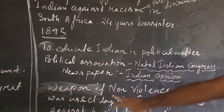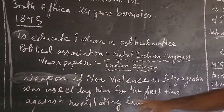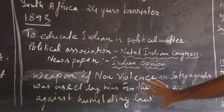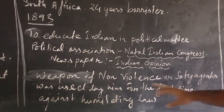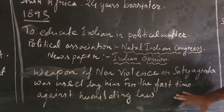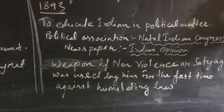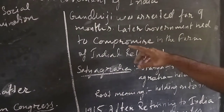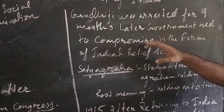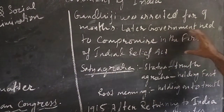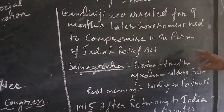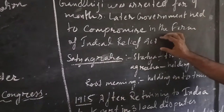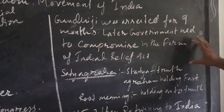The weapon of non-violence, or Satyagraha, was used by him for the first time against humiliating laws in South Africa. He took the stand of non-violence and Satyagraha against those humiliating laws. Gandhiji was arrested for 9 months when he took this stand, but later on the government had to release him due to a compromise in the form of the Indian Relief Act.